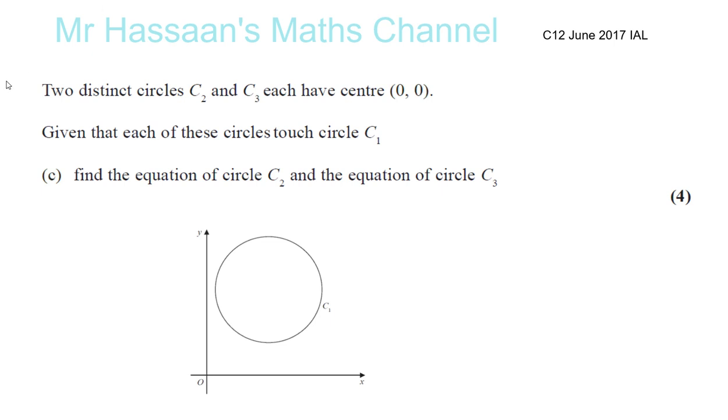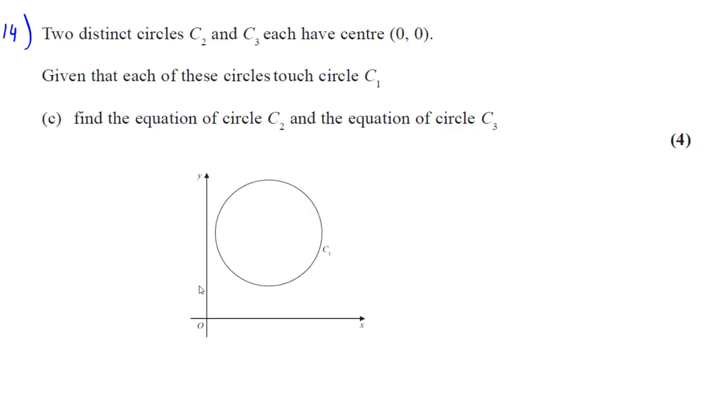So now for 14 part C, which was the actual question that was asked. We want to find the following. They told us that two distinct circles, C2 and C3, each have center (0, 0). Given that each of these circles touch circle C1, find the equation of circle 2 and the equation of circle 3.